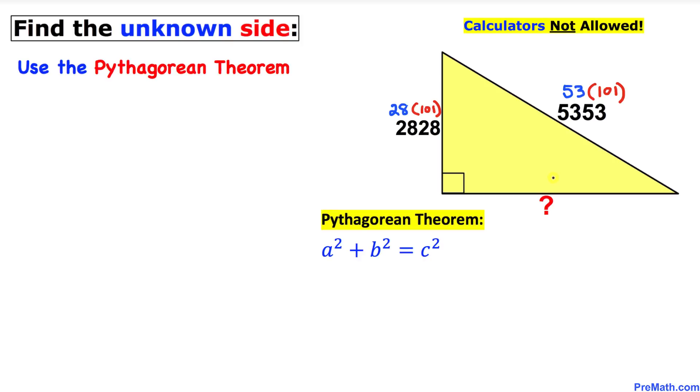Here's the Pythagorean theorem: a² + b² = c². Let me go ahead and call this side a, this side b, and this longest leg is going to be our side c.